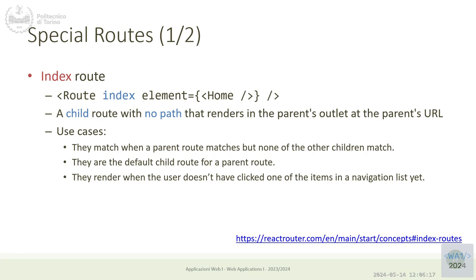The index route can be inserted as a child route, and if only the parent matches but none of the other children match, the index route is used. We could also call it 'default' — it means: if the parent route matches but none of the other children match, use this one. It only makes sense when you have other sibling routes.